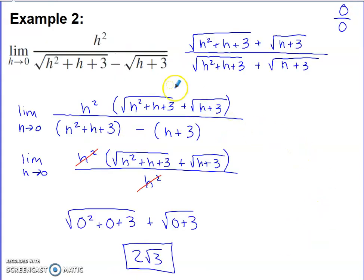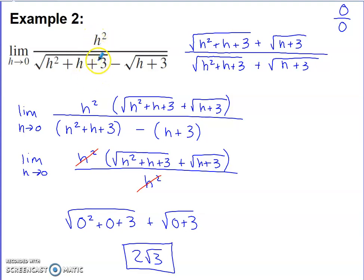The next one looks a little crazier initially, but the same initial step applies. Different variable — it's h approaching 0. Plug 0 in place of the h's and see what happens. You end up with 0 in the top, and then square root of 3 minus square root of 3 — also 0 in the bottom. Once again, that signals: do some algebra, get something to cancel, then re-evaluate the limit.